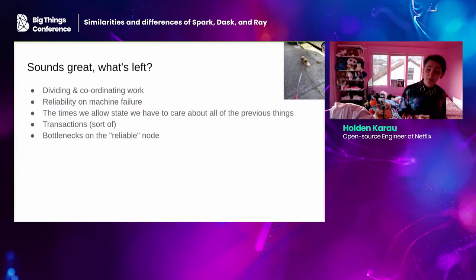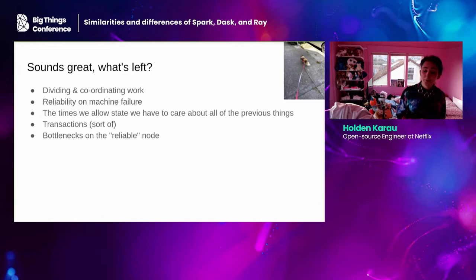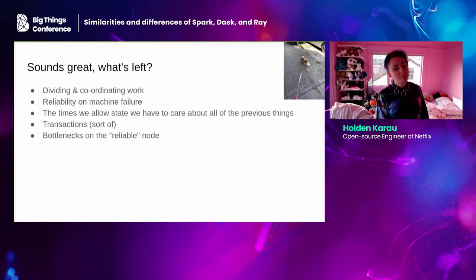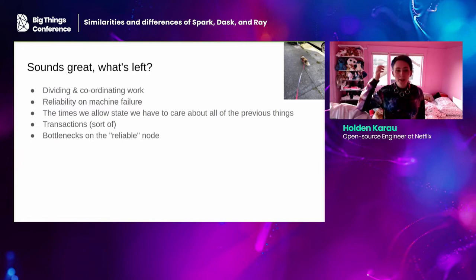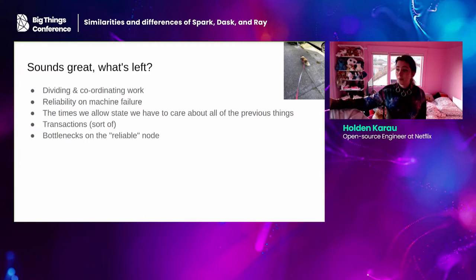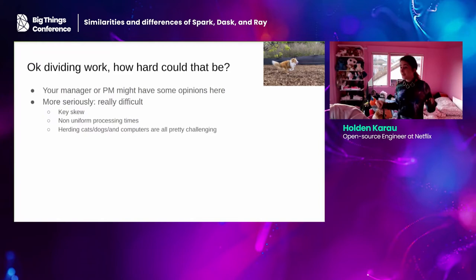What's left when we skip all those problems? Dividing and coordinating the work, reliability on machine failure besides the key node, and handling state. Even if we're doing stateless transformations, there's state like how far we've come along and which records we've processed. How hard can dividing work be? Key skew, non-uniform processing times, stragglers — if you've used Spark you're probably well aware — and pretty much any variant of trying to coordinate and split up work is actually really hard.